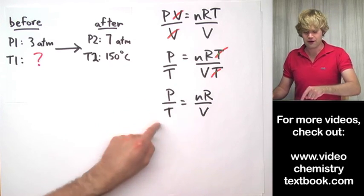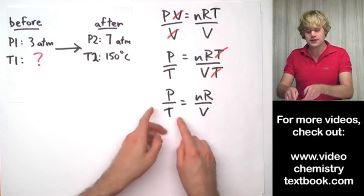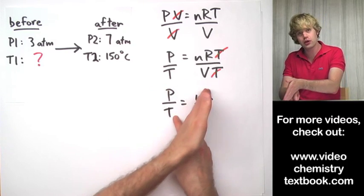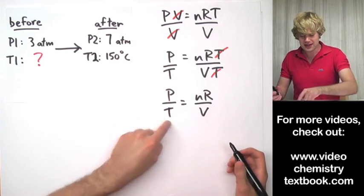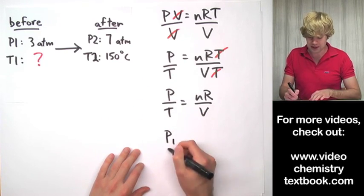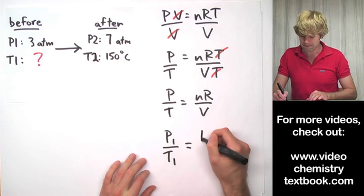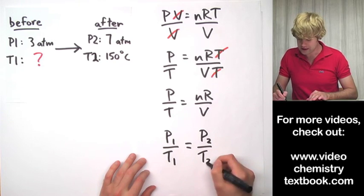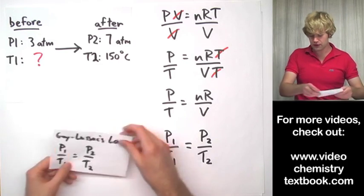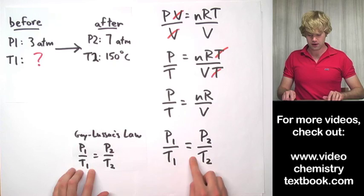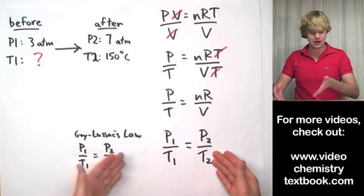Okay, so we have P over T on one side of the equation. Now it turns out that if something is on one side of the ideal gas equation, you can double it on the other side doing a before and after thing. Here's what I mean. We can take this P over T and turn that into P1 over T1, there's a before, and then we double it on the other side equals P2 over T2. What we've actually just done is we've created Gay-Lussac's law. But I didn't have to memorize it and all I had to do is take PV equals nRT and figure it out from there.